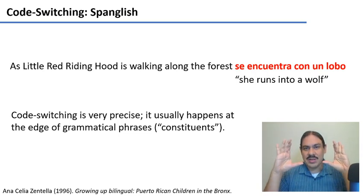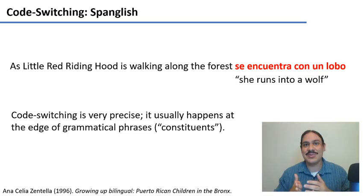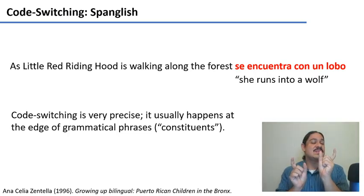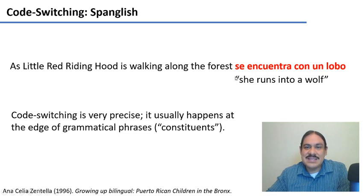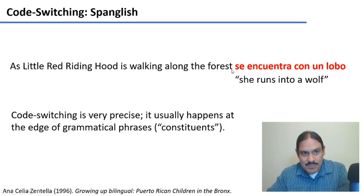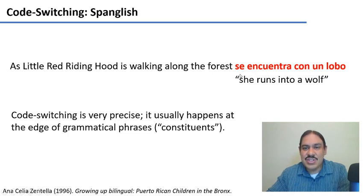So how does the switch work? The switch is incredibly precise — these are not just two languages badly mixed together; there is a lot of structure in how they mix. Remember when we studied constituents, which are the sub-parts of a sentence: noun phrases, verb phrases, inflectional phrases. You can see that this sentence switches from English to Spanish at the edge between a Complementizer Phrase (CP) and an Inflectional Phrase (IP). The CP in English — 'as little Red Riding Hood is walking along the forest' — is the description of how the verb happens. Then you start an IP: 'she runs into a wolf.' In Spanglish, you usually switch between languages at the edges of constituents.